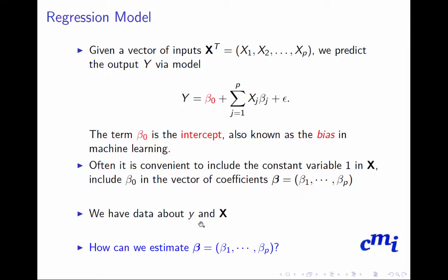We have the data y and X together forming the entire dataset. Given the data, we want to estimate β — all the coefficient variables, also known as weight variables in machine learning literature.